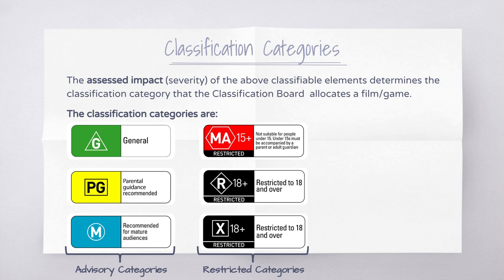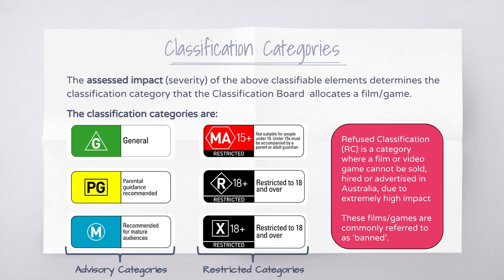In Australia, although we do not censor, the Classification Board may refuse classification to a film or video game. When a film or game is refused classification, it cannot be sold, hired, or even advertised in Australia due to its extremely high impact. We often call these 'banned films,' but the correct terminology is 'refused classification.' If a film contains a particularly offensive scene, the board will not remove it themselves — they tell the filmmakers the film is refused classification, and it may be up to the filmmakers to remove the offending scene so the product can be released in Australia.